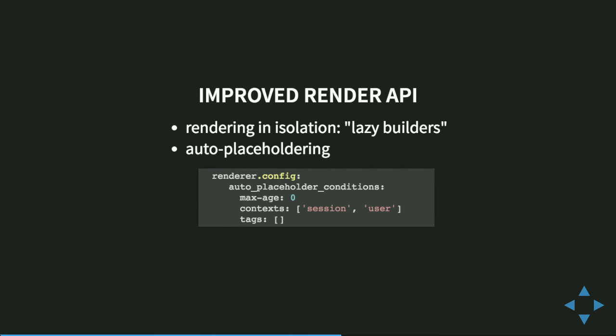Here we come to one of the coolest things: rendering in isolation, which is lazy builders and auto-placeholding. One of the big problems we had was that in Drupal 7, in a user block you would put in a user object, that user object would have a field, that field would have another node selected — a big chunk of data to load, very inefficient. We introduced lazy builders, ensuring that whatever parameters you give are either cache contexts or scalar values. You cannot just put in an object and say Drupal will serialize it somehow. If you want to render block one, you put in block one as a string identifier and load the block object inside the callback.